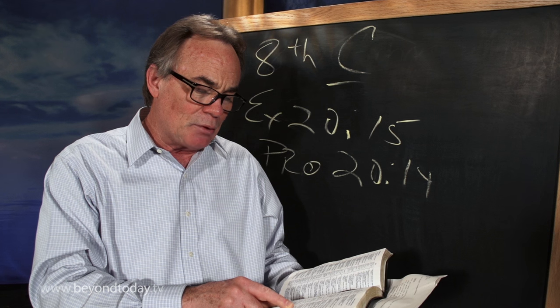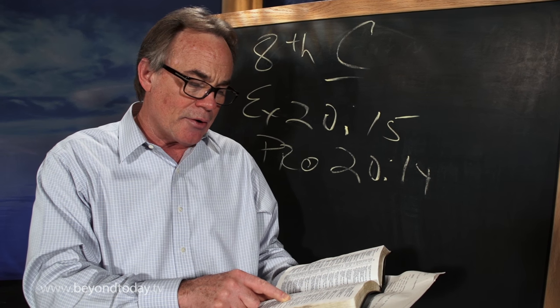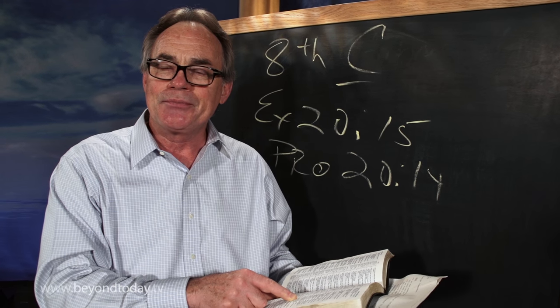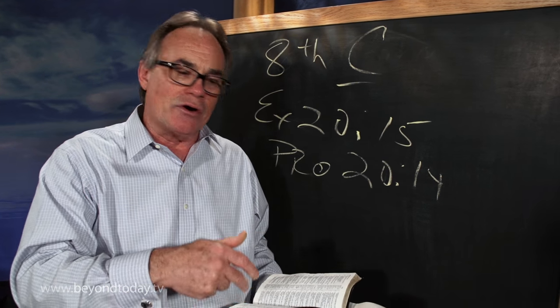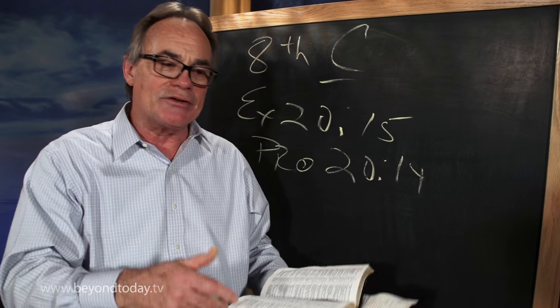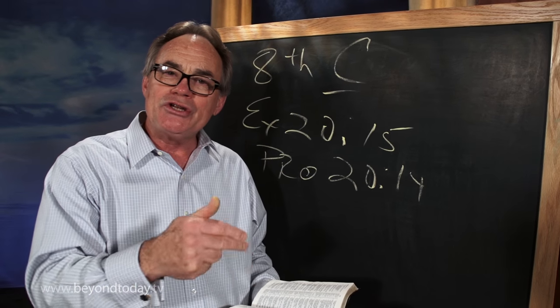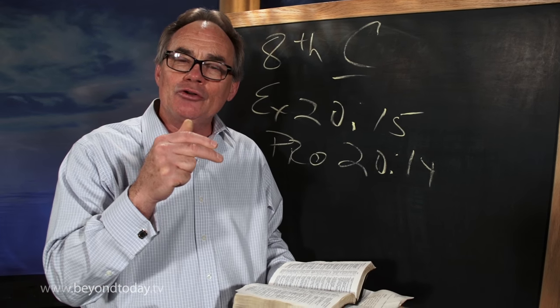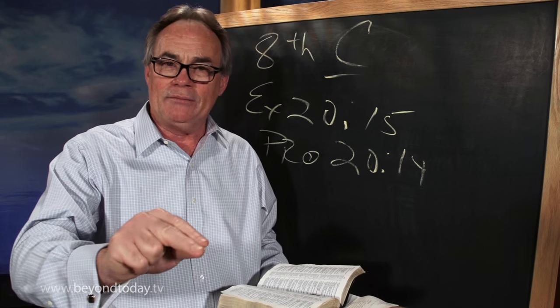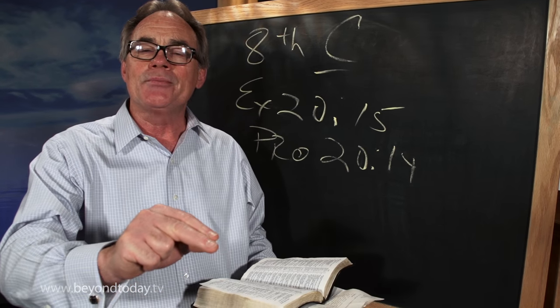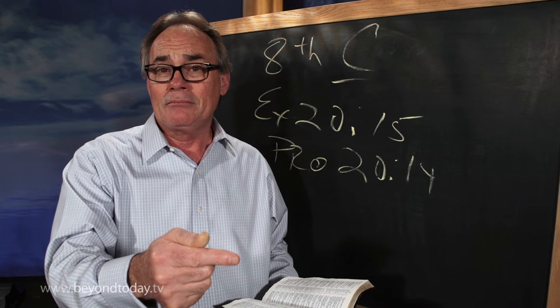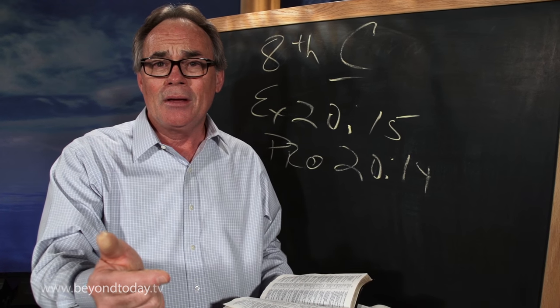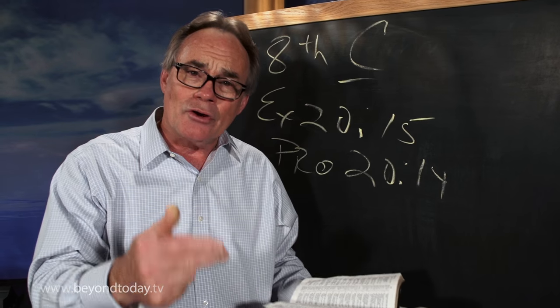And then it says, but when he's gone his way, meaning the buyer, then he boasts. In other words, a person says, this isn't worth this or it's worn out, the value is less than what you're asking. And one negotiates down the price to the point where even below market value, below the true value. And the buyer takes advantage of the seller. Sound familiar? Ever done that or tried to do that?